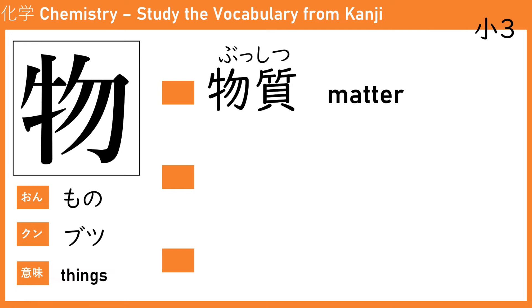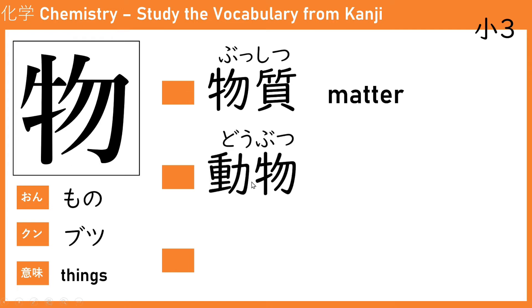For example, we have solid matter, liquid, and gas — this is matter. We also have 動物 (dou-butsu). 動 means move, so the things that move is an animal — 動物.